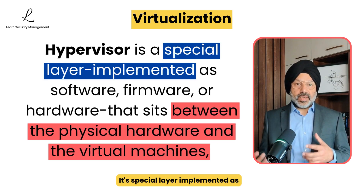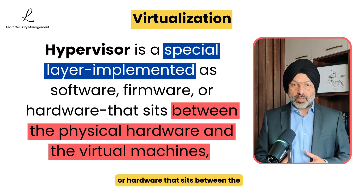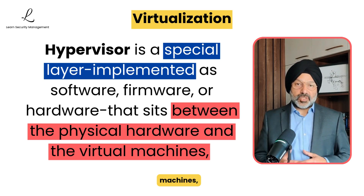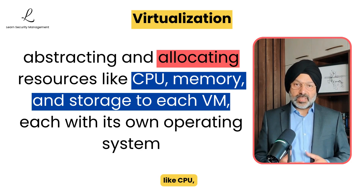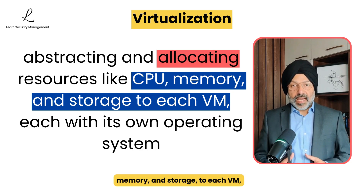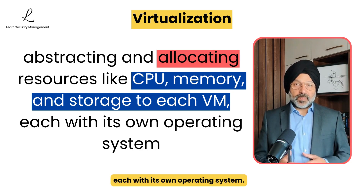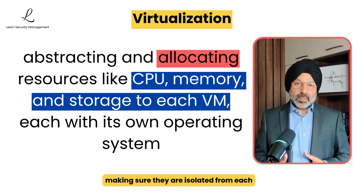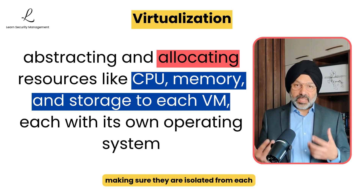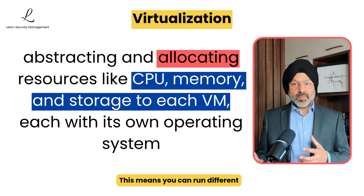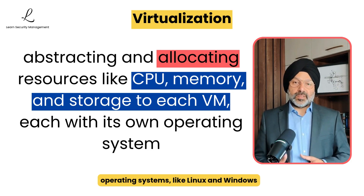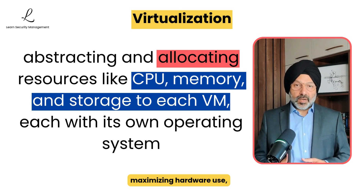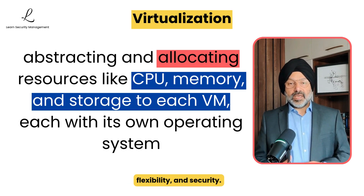The key technology that makes virtualization possible is the hypervisor — a special layer implemented as software, firmware, or hardware that sits between the physical hardware and the virtual machines, abstracting and allocating resources like CPU, memory, and storage to each VM. The hypervisor manages all the VMs, making sure they are isolated from each other and efficiently sharing the hardware, so you can run different operating systems like Linux and Windows side-by-side on the same server, maximizing hardware use, flexibility, and security.